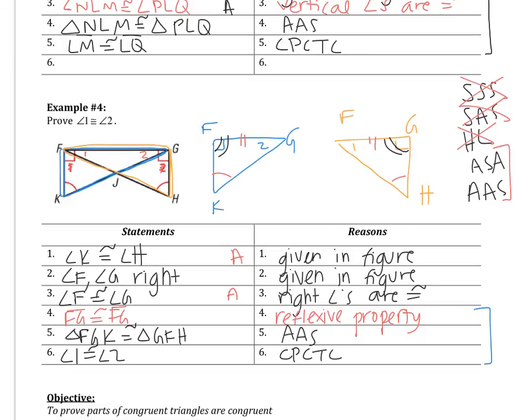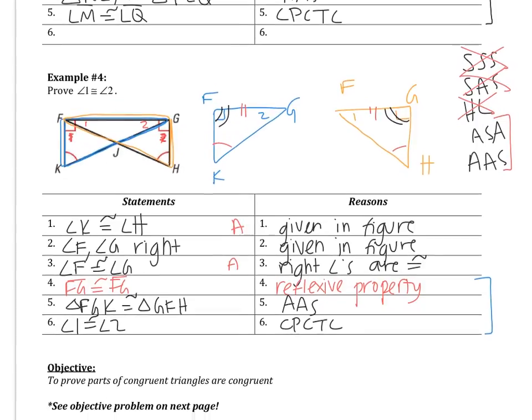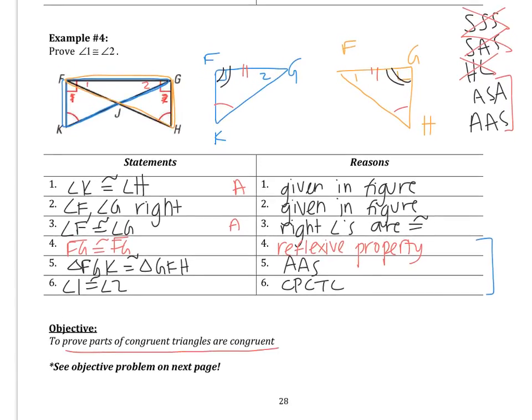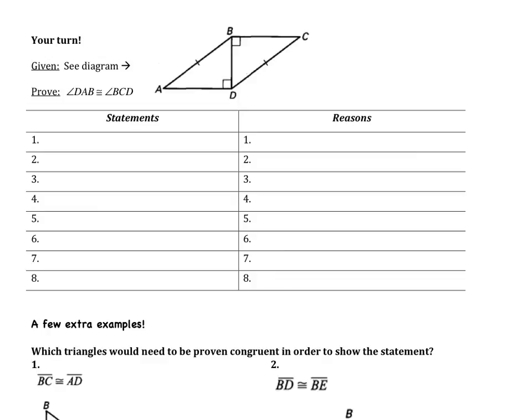Hopefully that went well. If not, that's okay — this is confusing and we'll do more of these in class. What we learned today is how to prove parts of congruent triangles are congruent using CPCTC — corresponding parts of congruent triangles are congruent. Make sure you have that memorized. You have one last problem: using the givens in the diagram, prove that angles DAB and BCD are congruent.